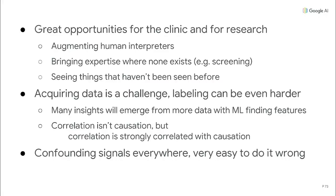And of course, seeing things that haven't been seen before — companion diagnostics, pathology, the fundus. That's really cool. If you're doing things that humans did better, faster, more consistently, you really have to think about how that fits in the existing workflow. Data is another issue — acquiring data is a challenge, labeling can be even harder. Correlation isn't causation, but correlation is correlated with causation. These machines are just correlation engines, but some of these correlations are going to be really interesting with ML finding the features. The last thing: it's really easy to do this wrong. Confounding data signals are everywhere — if your results seem too good, they probably are.